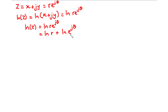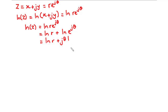Because e exponent j theta has an exponent, we transport that exponent in front of the log. So this becomes ln r plus j theta times ln e. Because this is the natural logarithm of e, and the natural logarithm has base e, the log of the same base equals 1. So instead of writing ln e, we have 1. Finally, we have ln z equals ln r plus j theta.